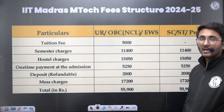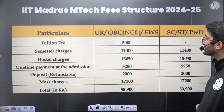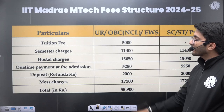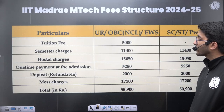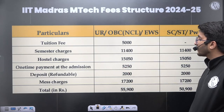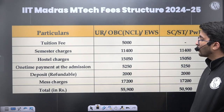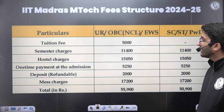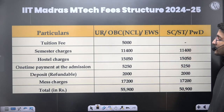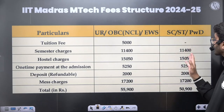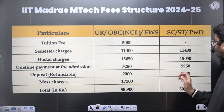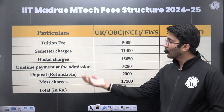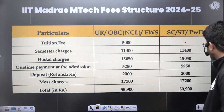For IIT Madras, the tuition fees is ₹5,000, semester charges are ₹11,400, hostel charges are ₹15,000, one-time payment at admission is ₹5,250, the refundable deposit is ₹2,000, and mess charges are ₹17,200 — making the total approximately ₹55,900 for General category. For SC, ST, and PWD, the semester charges are ₹11,400, hostel charges ₹15,000, one-time payment ₹5,250, deposit ₹2,000, and mess charges ₹17,200, totaling approximately ₹50,900, which includes hostel, mess, and tuition fees.